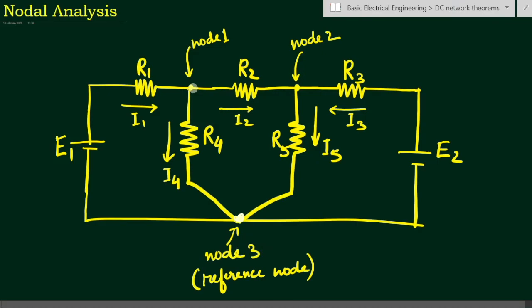This is node number three, which we will take as the reference node. Here we will find out the node voltages — suppose node voltage is Va and this node voltage is Vb. One node is assumed as the reference node. Node number three is known as the reference node, datum node, or zero potential node. Therefore the number of equations becomes N minus one.